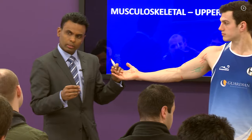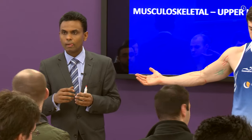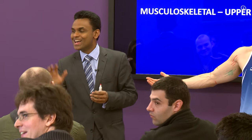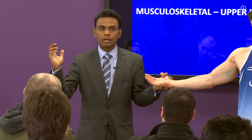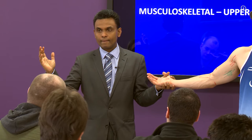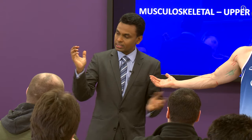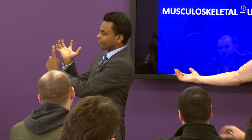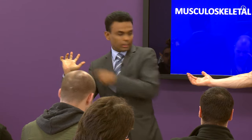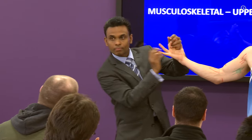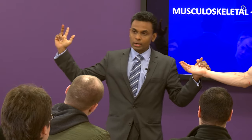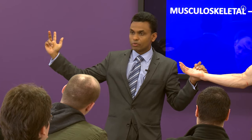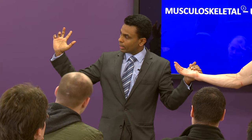What is the principle behind claw hand? The classical feature is hyperextension of the MCP joint and flexion of the IP joint — that is claw hand. You need to distinguish this from Dupuytren's contracture or Volkmann's contracture. In claw hand, specifically the MCP joints must be hyperextended.